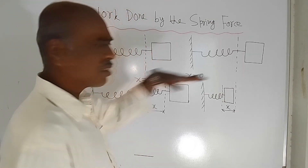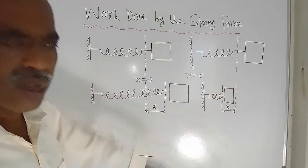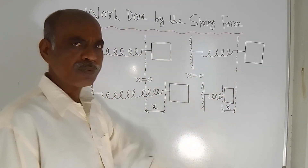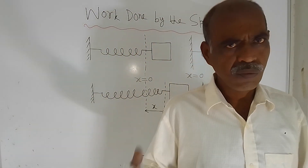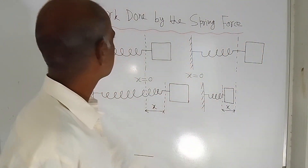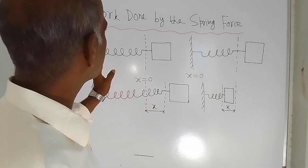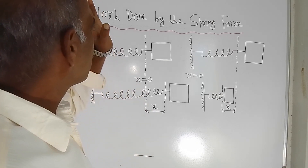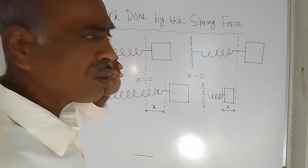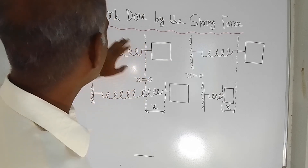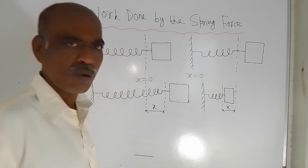Along the surface of the table, means along the length of the spring, the displacement of the block will be measured. For this analysis, what we are going to do is calculate the work done by the spring force.